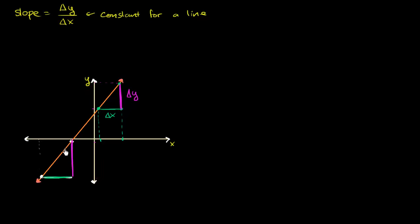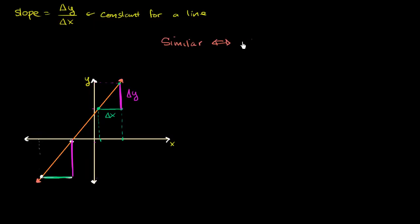I'm just picking two sets of arbitrary points here. The way I will show it is through similarity. If I can show that this triangle is similar to this triangle, then we are all set up. Two triangles are similar if and only if all corresponding angles are congruent.